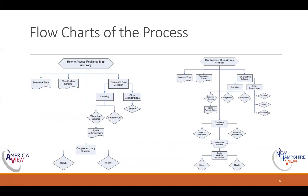Here are some flowcharts that show that process. You'll see similarities between the flowcharts, though thematic map accuracy assessment is a little bit more complex — and that's absolutely true. Both require considering sources of error, thinking about the classification scheme, and discussing reference data collection. Reference data collection involves non-statistical considerations like data sources, and more statistical ones like sampling design, sample size, sampling scheme, and issues of spatial autocorrelation.